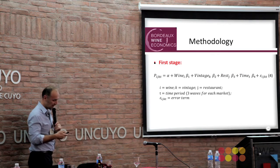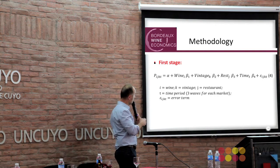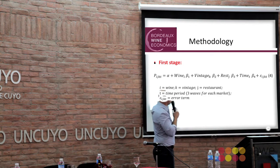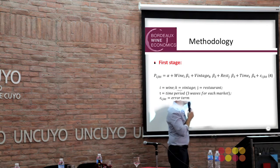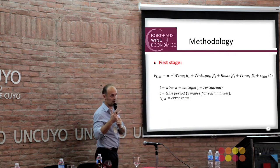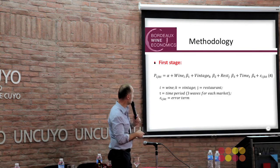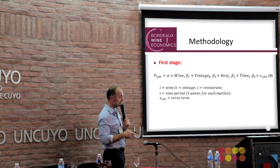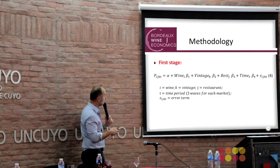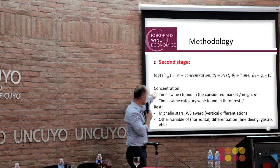In our study, the first stage regresses the price in level — not in log — against only fixed effects for wine, vintage, restaurant, and time. You may recall the three dates of observation of wine prices in restaurants for each market. It's a very simple model, and from this model we keep the residuals to go directly to the second stage: the regression of the log of the squared residuals.